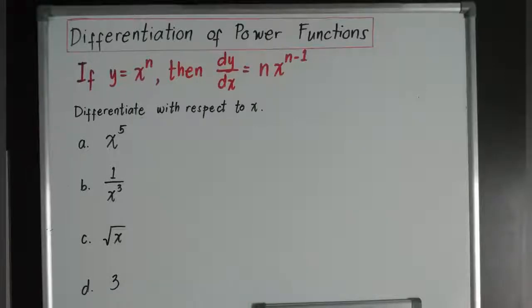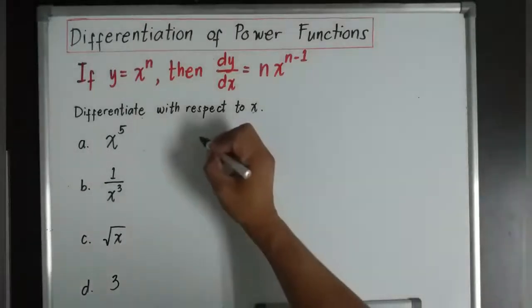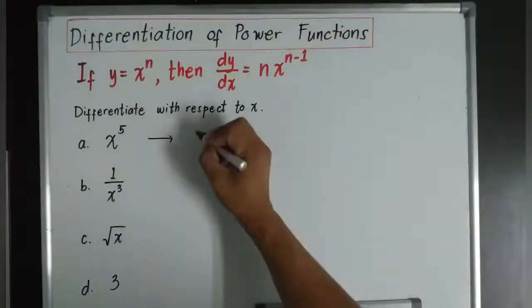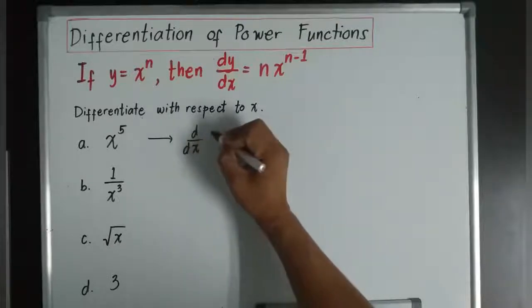So what are we going to do with problems like this? Let's go first with letter A. Letter A, let's start with the basic one, x power of 5. So it says differentiate with respect to x. So it means the derivative of x power of 5.